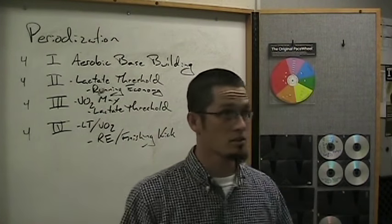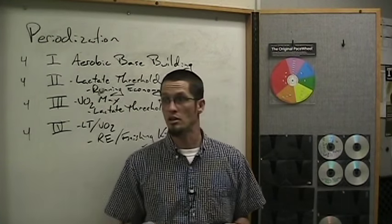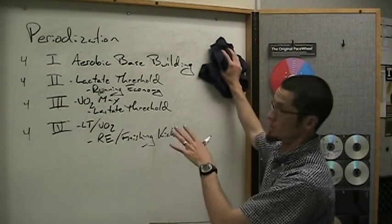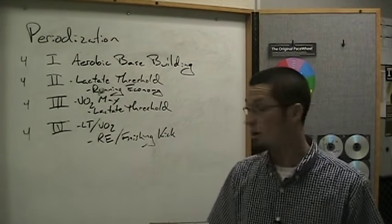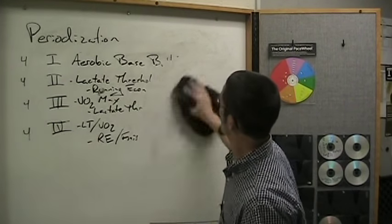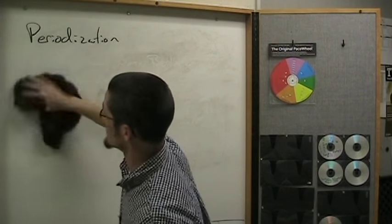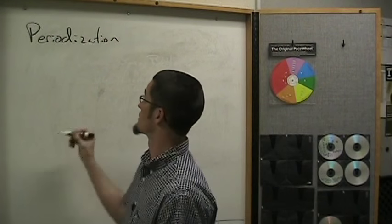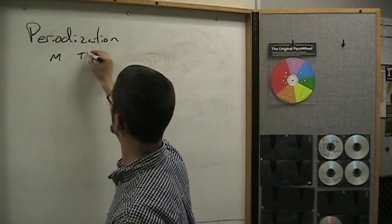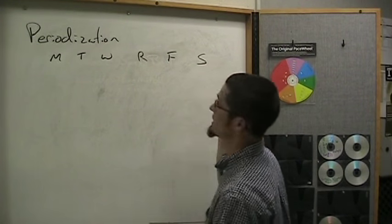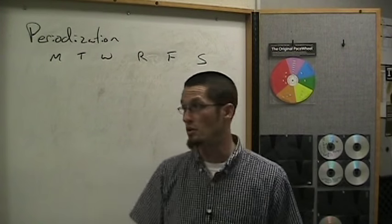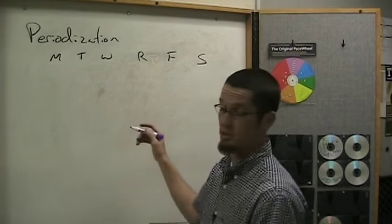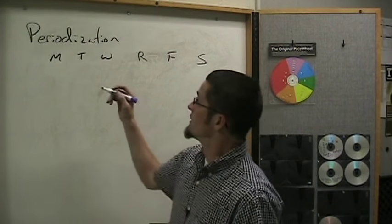How do you build a calendar for training? You need to look at how many days of the week you're going to have your athletes train. I coach at a high school and have my athletes train six days a week: Monday, Tuesday, Wednesday, Thursday, Friday, Saturday — and Sunday is always off. For phase one, we're doing aerobic base training. In phase one I'm going to do four weeks of easy runs. Blue for easy: an easy 30 minutes each day Monday through Friday, and then a long run of about 60 to 65 minutes on Saturday.